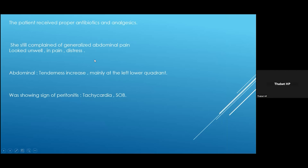The patient received good antibiotics. However, she still complained of generalized abdominal pain after being admitted to the ward for one more day. She was looking unwell, in pain and distress. On abdominal examination, the tenderness was increasing, mainly in the left lower quadrant, and she was showing signs of peritonitis. She was also tachycardic and showed a picture of shortness of breath.